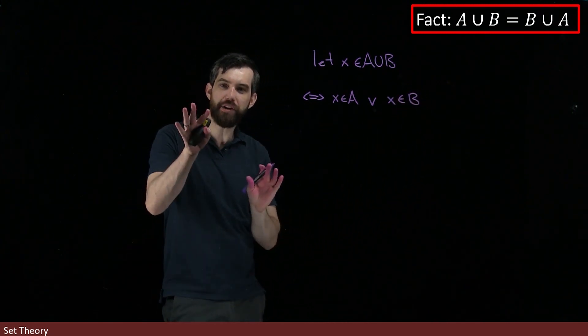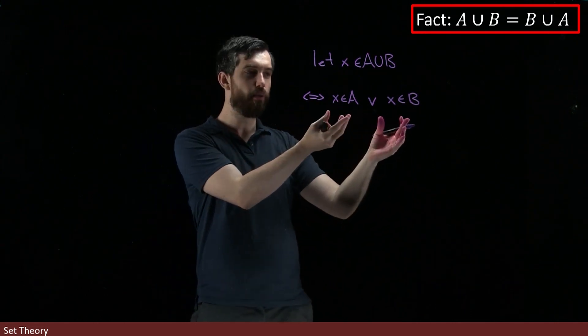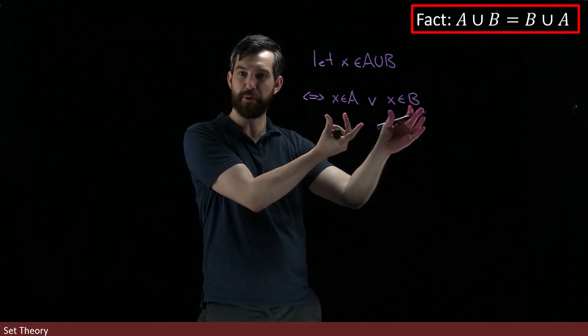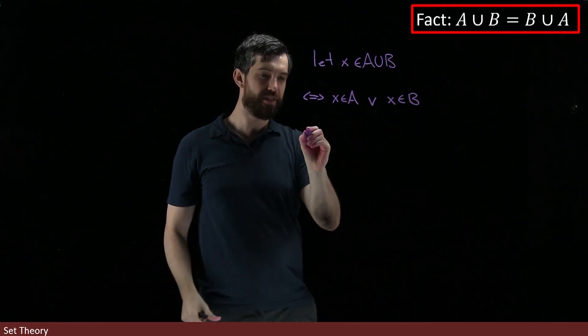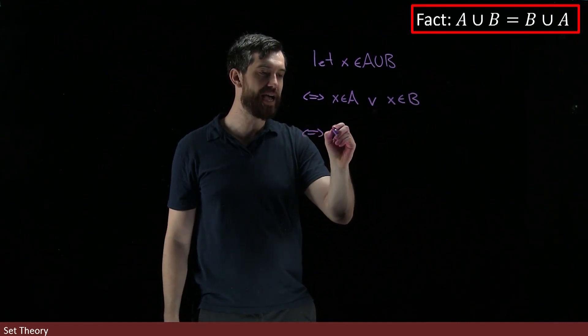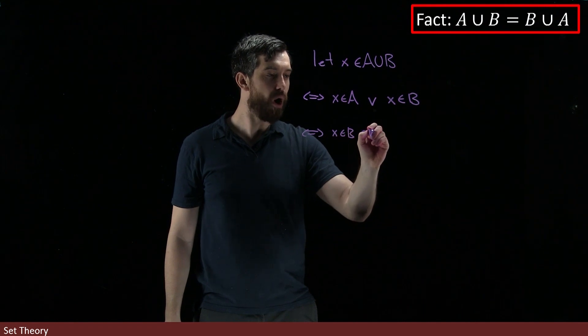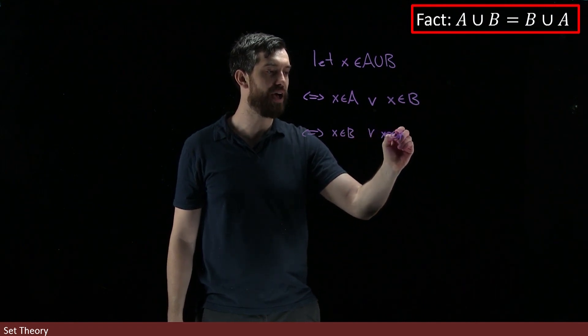But now we can use a property that we had for disjunctives. We know that two properties that are connected with an or, I can reverse that order. I can say that this is the same thing as X inside of B or X is inside of A.